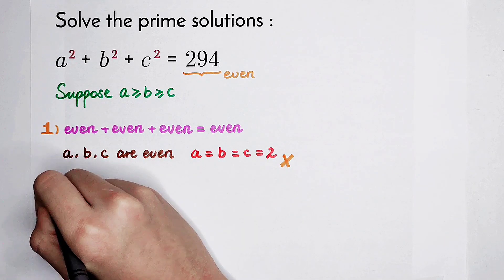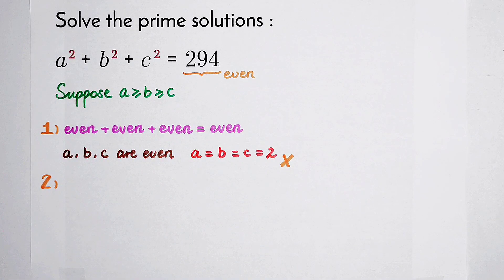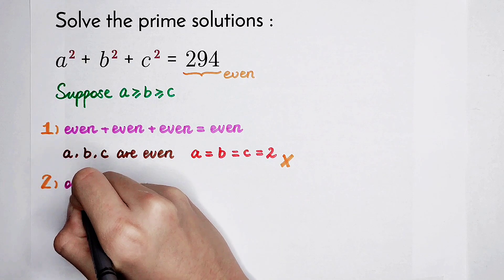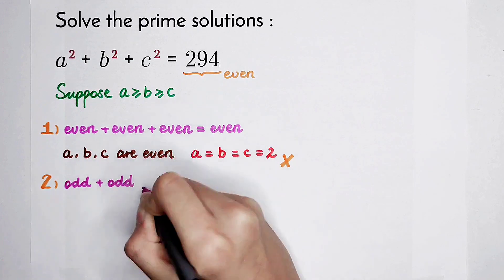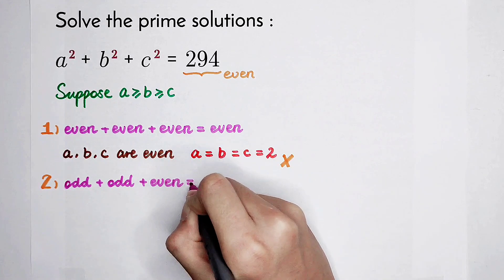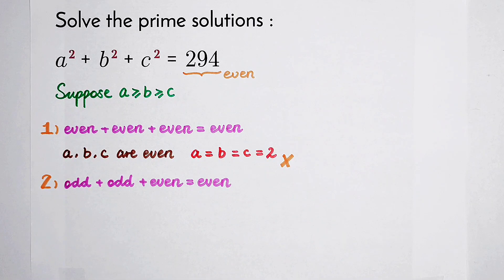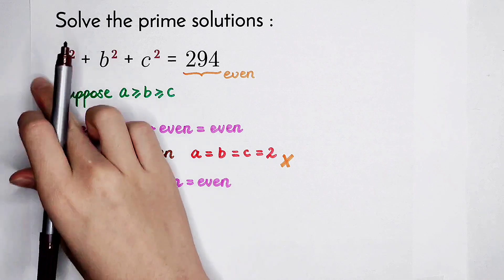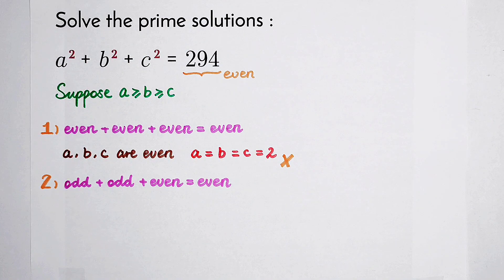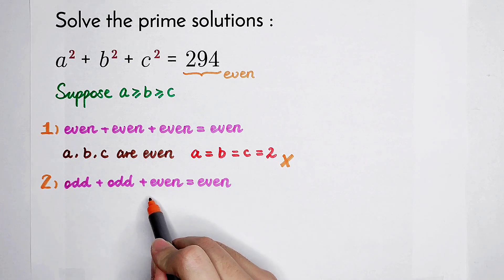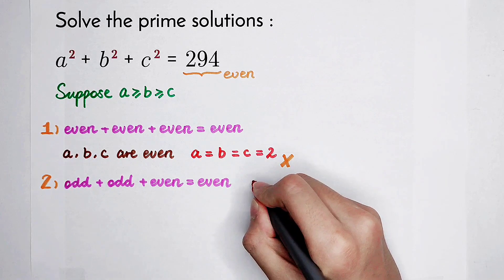Of course, we also have another case. An even number can equal the sum of two odd numbers and one even number: odd plus odd plus even equals even. Since a, b, and c are all prime and there is only one even prime number — which is 2, also the smallest prime — and we supposed c is the smallest, we get c is equal to 2.